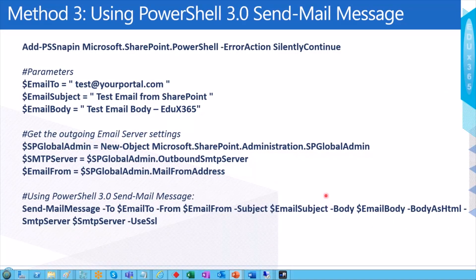The third method uses the PowerShell 3.0 Send-MailMessage approach. You supply a bunch of parameters — subject, body — retrieve the outgoing configuration settings, and then use the Send-MailMessage cmdlet passing those parameters to perform the email communication test.